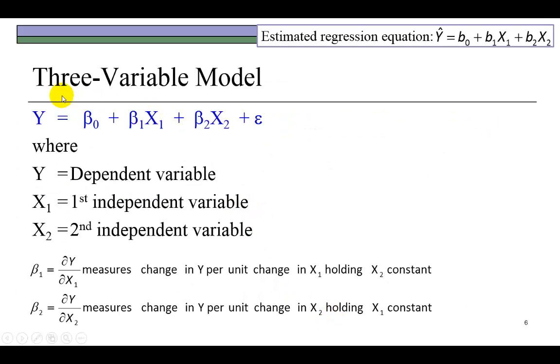Now consider the three-variable model, which is the dependent variable and two independent variables. This is the estimated regression equation. Here, b₁ would measure the change in Y per unit change in X₁, holding X₂ constant. And likewise, b₂ would measure the partial derivative of Y with respect to X₂, holding X₁ constant.